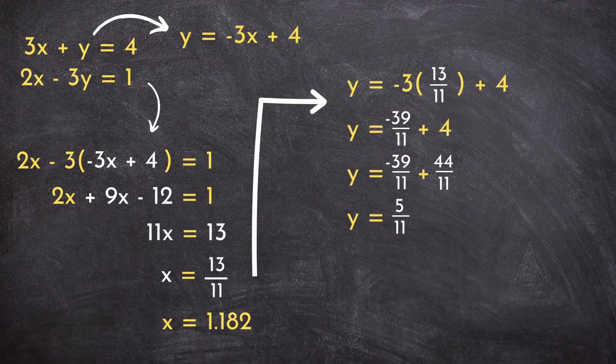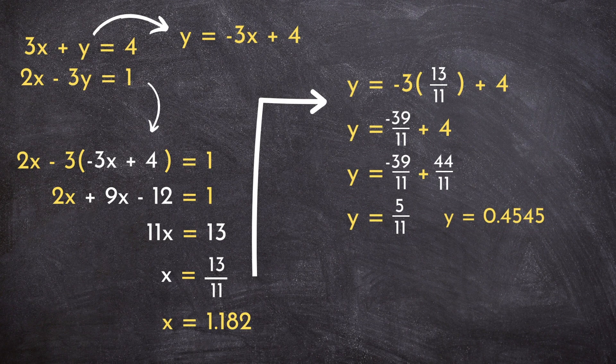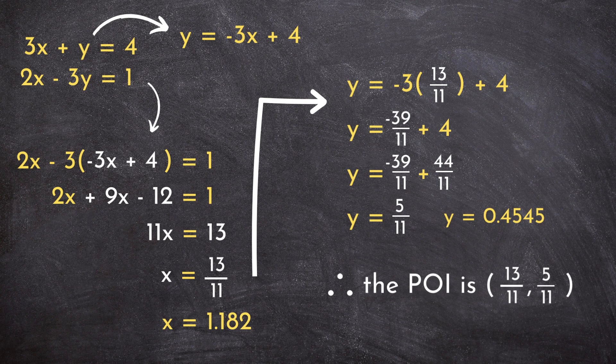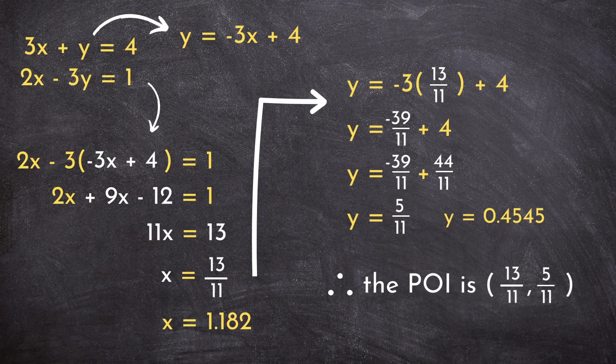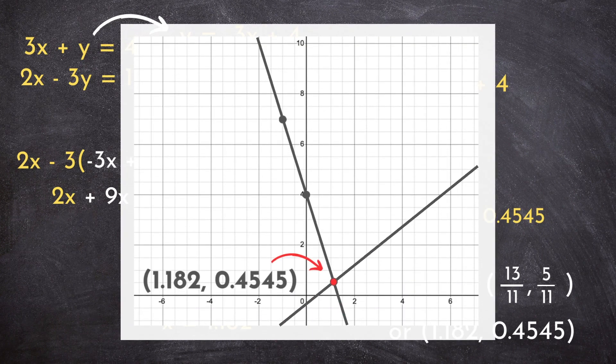Less surprising this time. And if you're a decimal person, that's the same thing as 0.4545. So we can think of this point of intersection as either 13 over 11, 5 over 11, or 1.182, 0.4545. And when we graph these two lines, we can see that they intersect at that point.